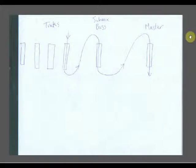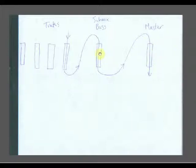The important thing to notice here is that there's only one path to the master bus. A signal flows down through the track, down through the track's processing, hits the fader, comes over to the submix bus, hits whatever processing is here, the fader again, to the master, processing, fader. If I were to mute the submix bus here, nothing would make it to the master and you wouldn't hear anything. Each of these tracks would have the same signal path — I just didn't draw them all in to avoid clutter.